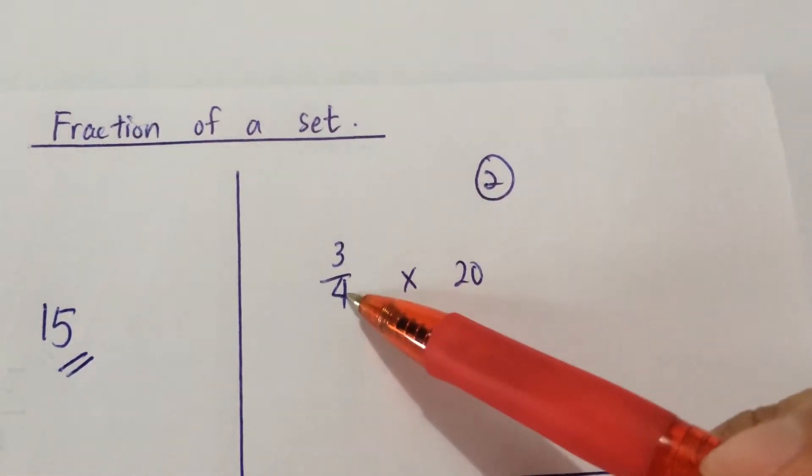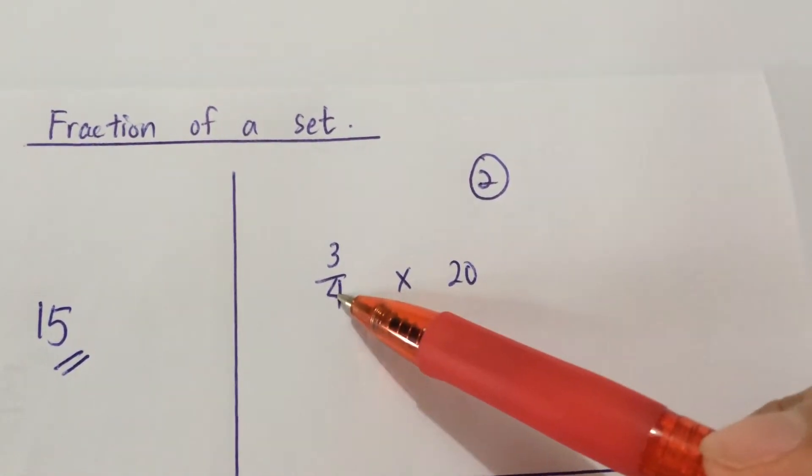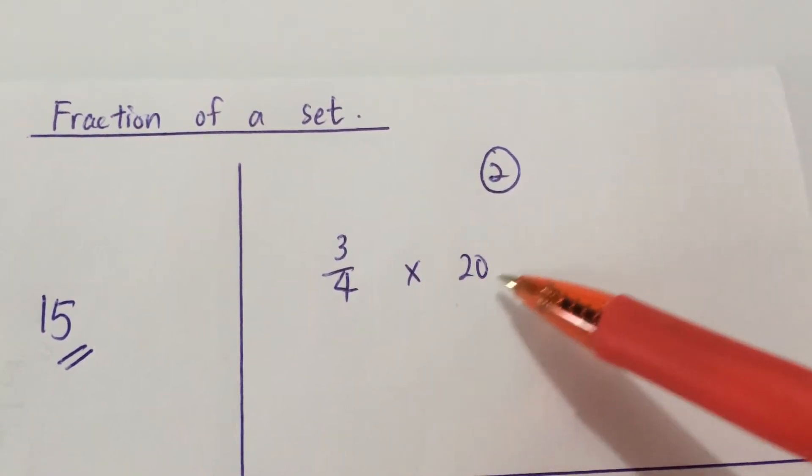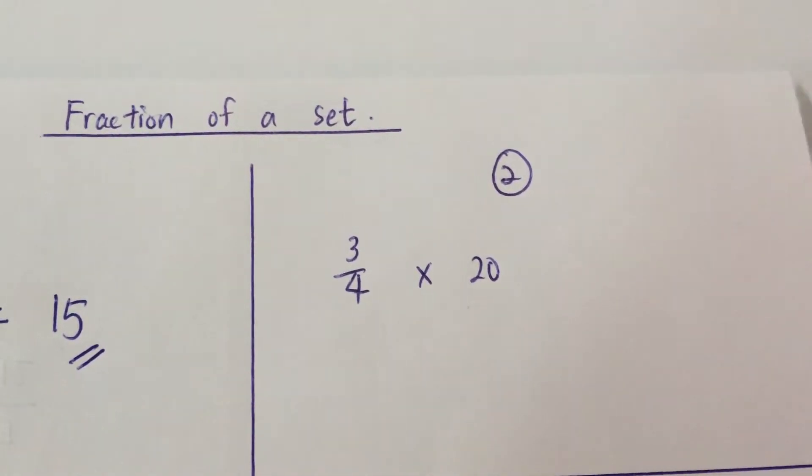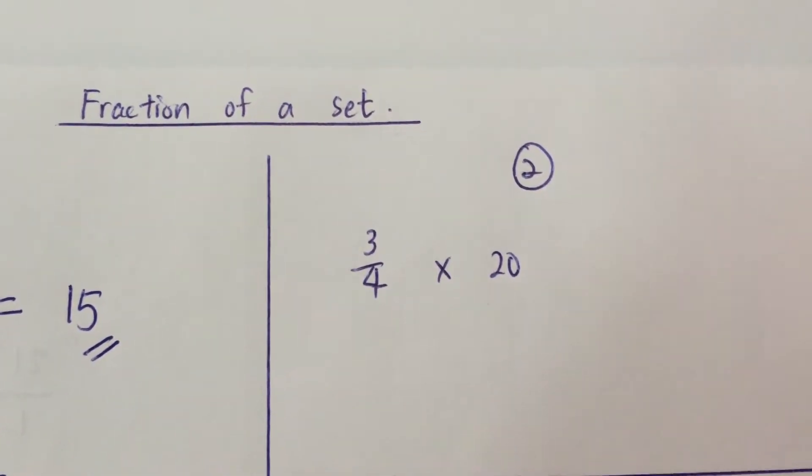What you do is take a look at the denominator 4 and the whole number 20. You are going to divide it by its lowest common multiple, which is 4. Now, if you don't know what's the lowest common multiple, it's fine.